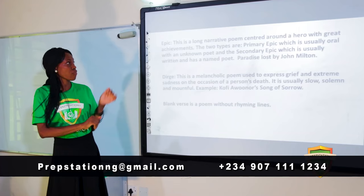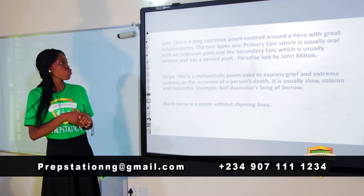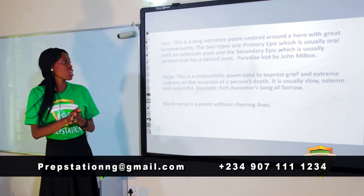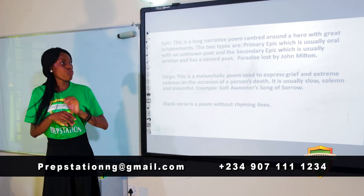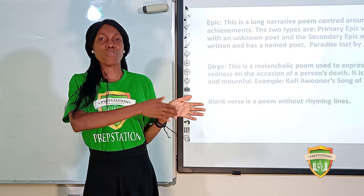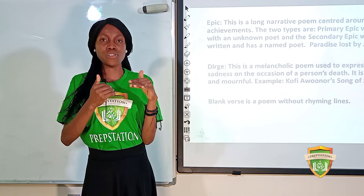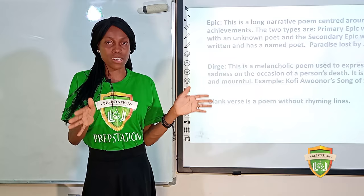An epic is a long narrative poem centered around a hero with great achievements. There are two types: the primary epic, which is usually oral with an unknown poet, and the secondary epic, which is written and has a named poet. An example of the secondary epic is Paradise Lost by John Milton, which tells the story of Adam and Eve, their temptation, and how they lost Paradise.